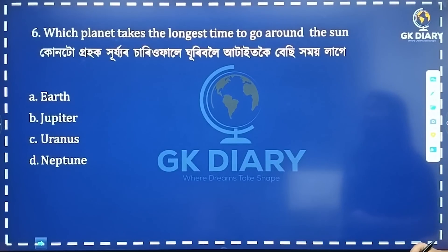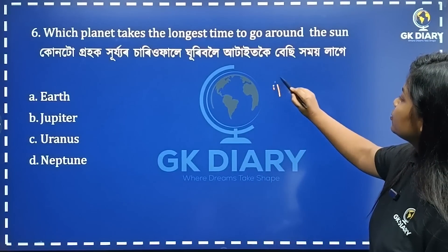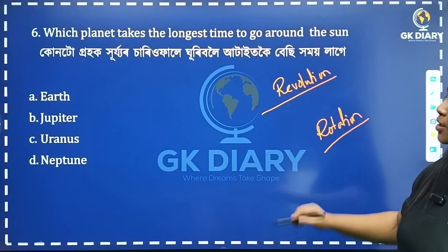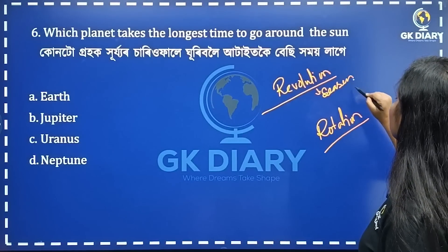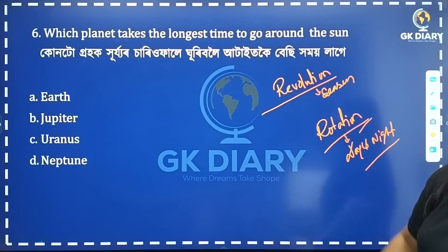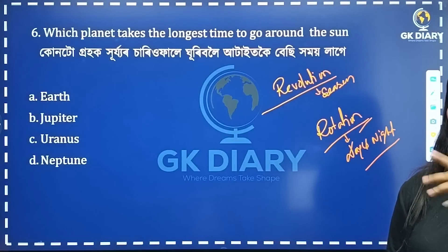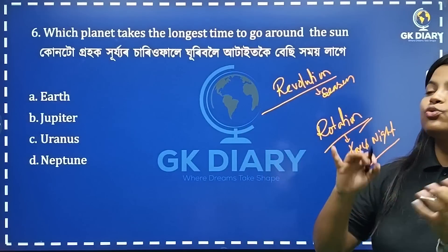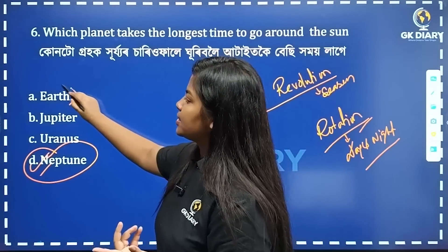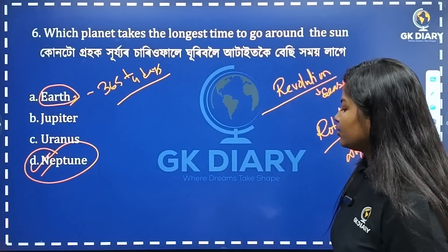Which planet takes the longest time to go around the Sun? Rotation causes day and night formation — 23 hours 56 minutes 4 seconds. Revolution causes season formation — 365 and a quarter days, so 365 days.